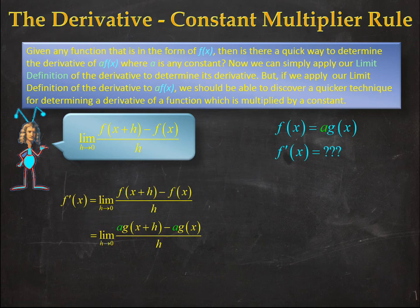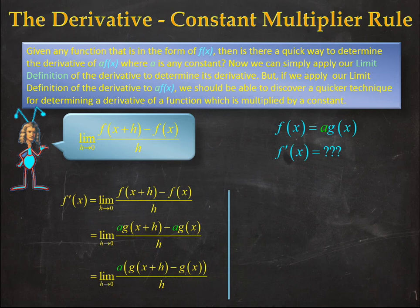Now it's up to algebra to assist us. If you look at the numerator, both terms have the same constant a, so I can just factor that out. We also recall with our limits, because we're dealing with the limit as h goes to zero, a has nothing to do with h, so we can pull that right outside of the limit. We now have a times the limit as h goes to zero of [g(x+h) - g(x)]/h.